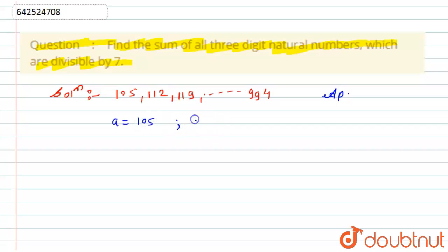As we know that d is nothing but the common difference of an AP, which will be nothing but equal to second term minus first term, which will be here. I get the common difference as 7. Now and this is the last term, so the last term of an AP will be nothing but 994.